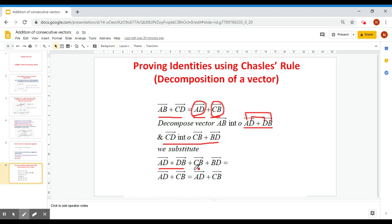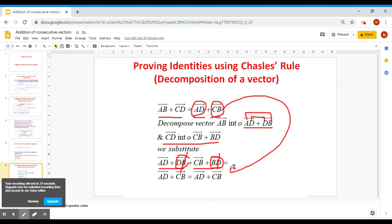But if I look here, DB and BD are opposite vectors. So their sum is equal to zero, and they cancel out. I'm left with AD plus CB, which is equal to the other part of the equation. So I have proven my identity.